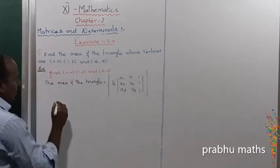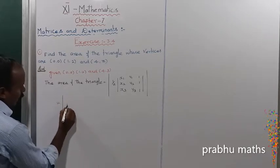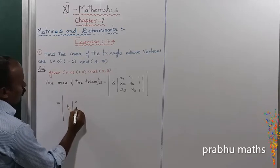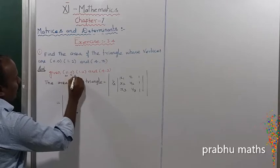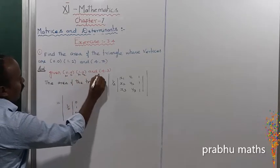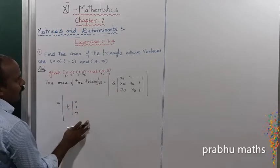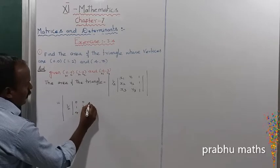That equals modulus of 1/2 times the determinant of 0, 1, 4, 0, 2, 3, 1, 1, 1. So X1, X2, X3 are 0, 1, 4 and Y1, Y2, Y3 are 0, 2, 3.